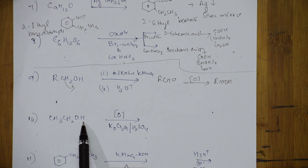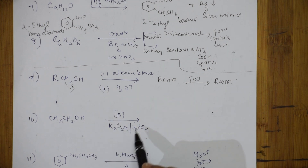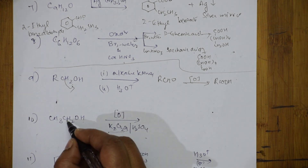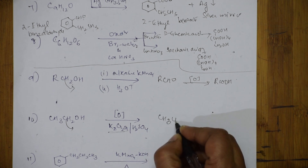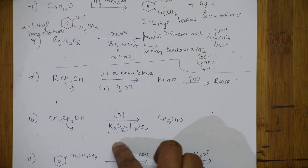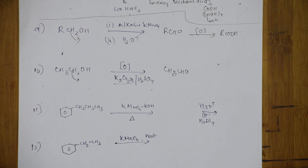Again, they've given an alcohol with potassium dichromate — also an oxidizing agent — in acidic medium. The process is the same: remove the hydrogen from the alcohol to get the aldehyde, and further oxidation gives the acid. Water is also produced in the reaction.